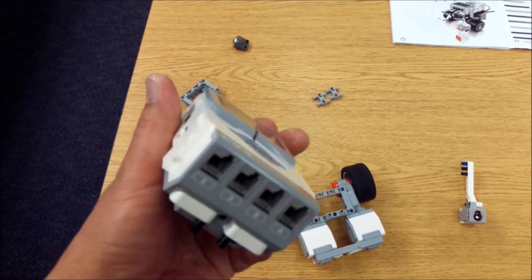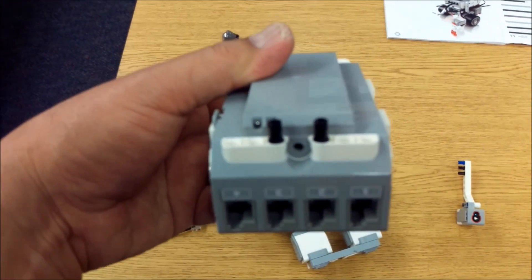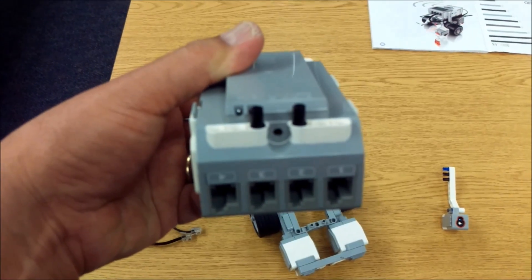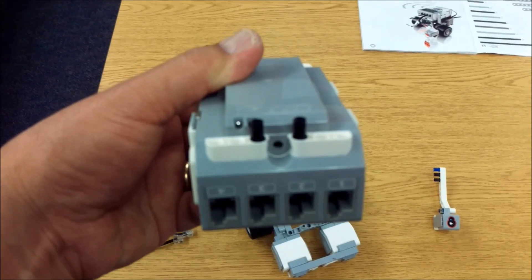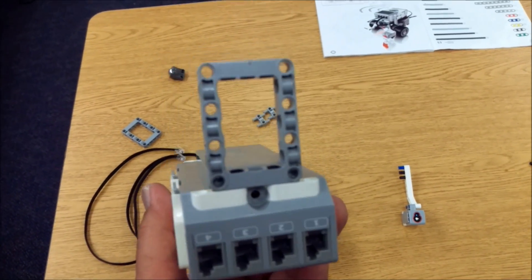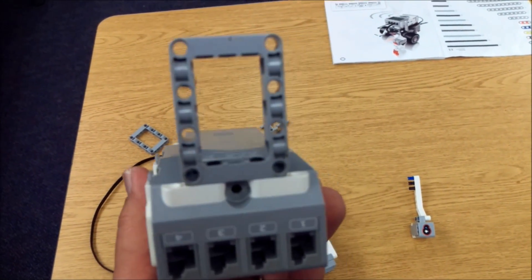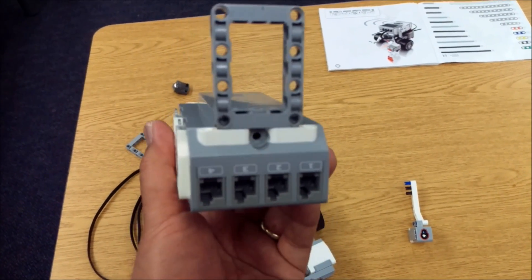Next grab your brick and we're going to place two black connector pieces like so. And then we will attach another one of your gray squares to those black connectors like so.